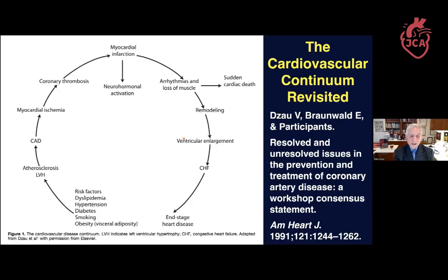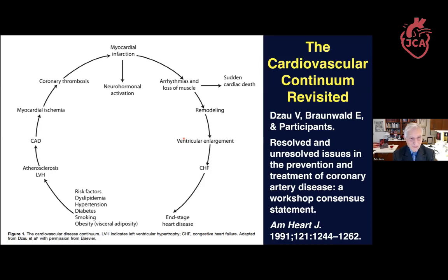This is the Braunwald lecture, a particular honor for me. Going back 30 years, while Johan and I were voices crying out in the wilderness about inflammation and atherosclerosis, Professor Braunwald and Victor Dzau put together the cardiovascular continuum — showing we start with risk factors, develop atherosclerosis, develop infarct, have loss of muscle, remodeling, ventricular enlargement, heart failure, and advanced heart disease.